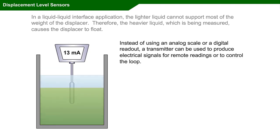Instead of using an analog scale or a digital readout, a transmitter can be used to produce electrical signals for remote readings or to control the loop.